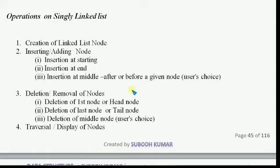The next operation is deletion, that is removal of nodes. Removal of a node can be done from the first (head) node, the last (tail) node, or in between — based on user choice, we can delete a node from anywhere. The last operation is traversal, that is display of nodes.